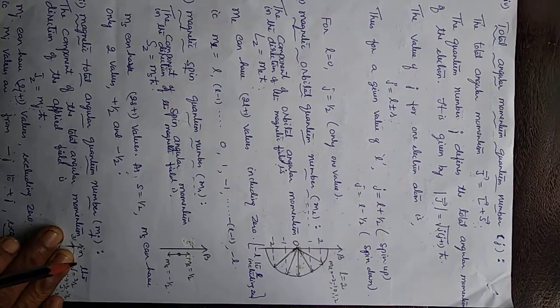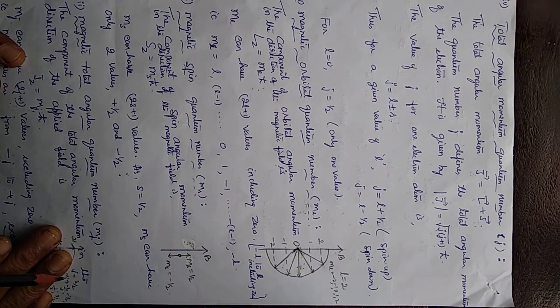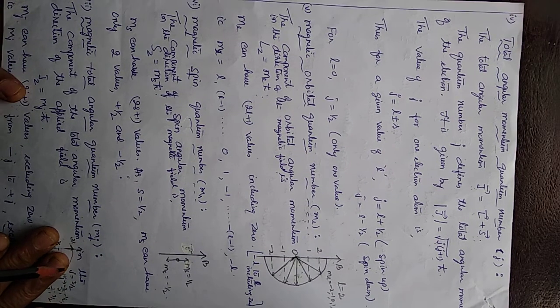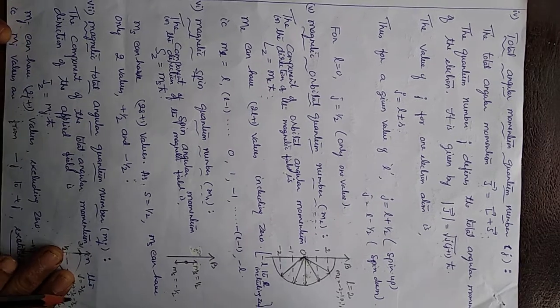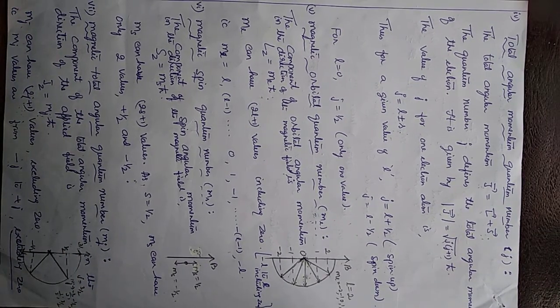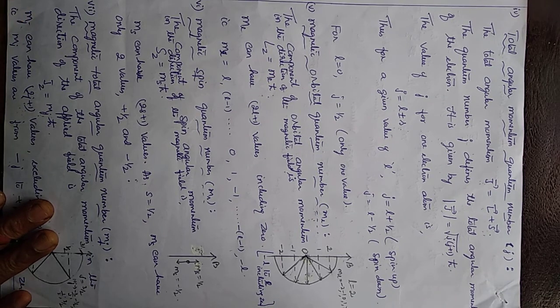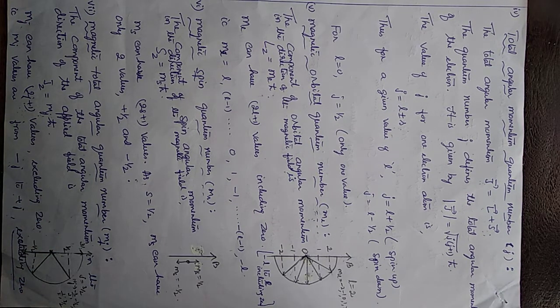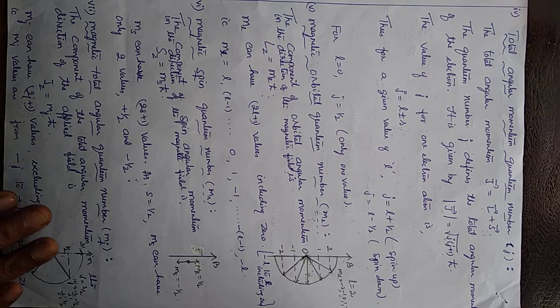Using all these quantum numbers, the vector atom model could explain the fine structure of the spectral lines of one-electron atoms. This is about the atom model proposed for such atoms. With this, I stop here and we will continue the class with another topic. Thank you.